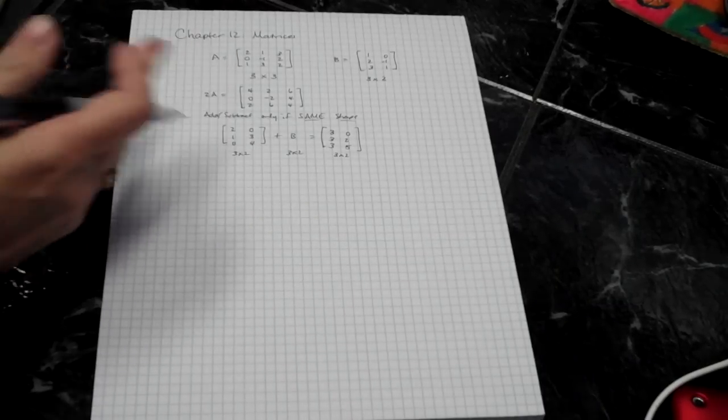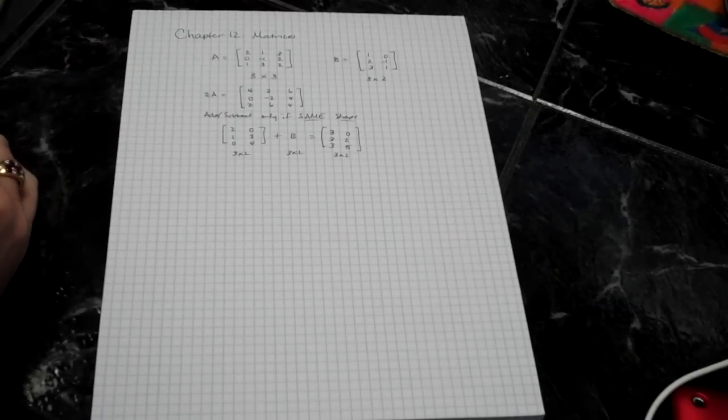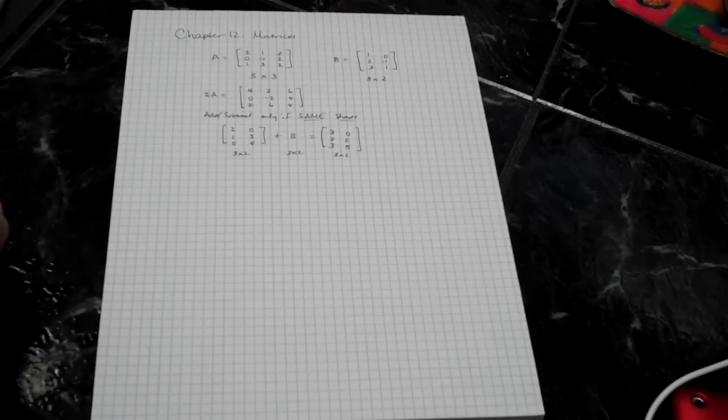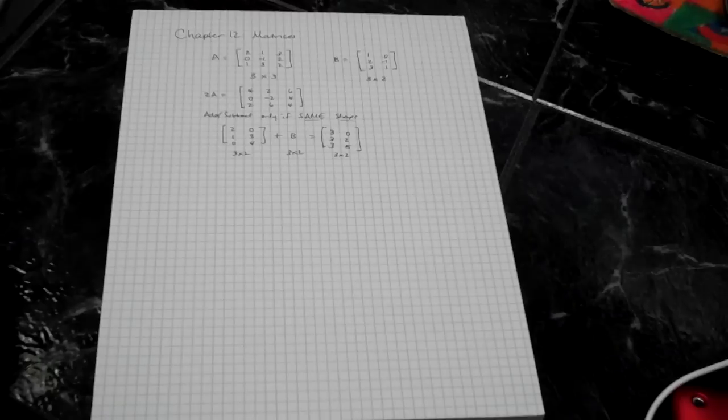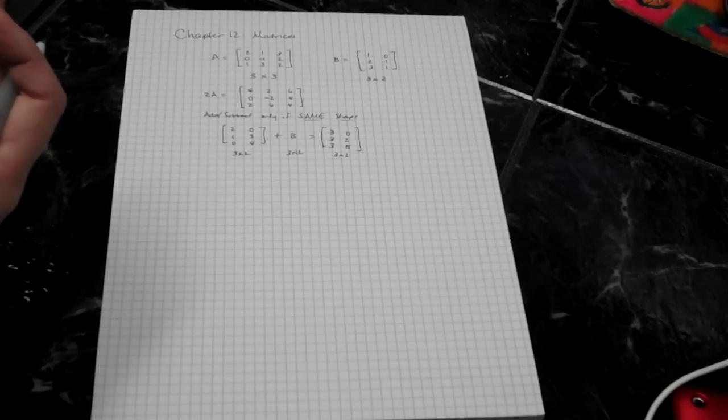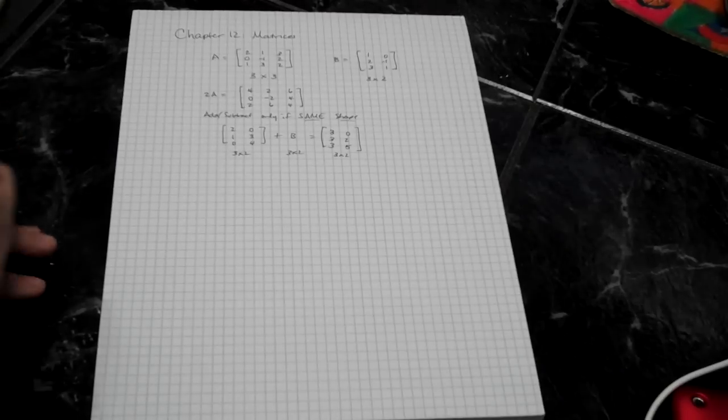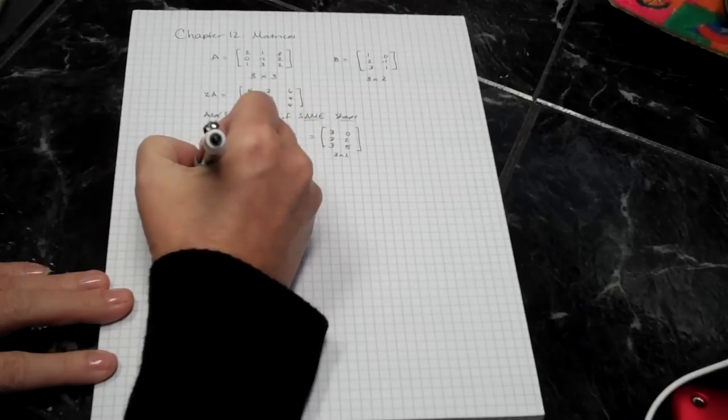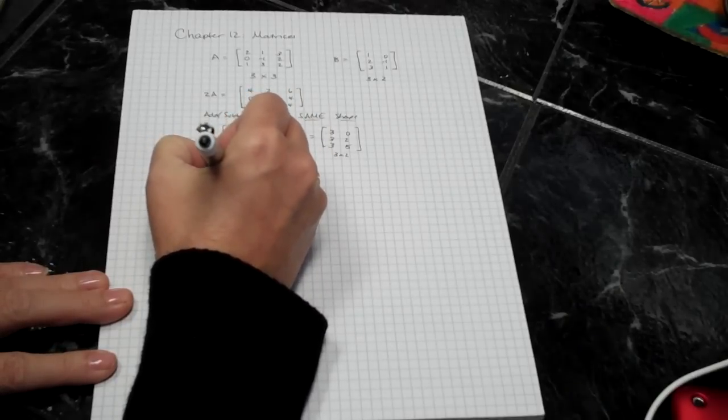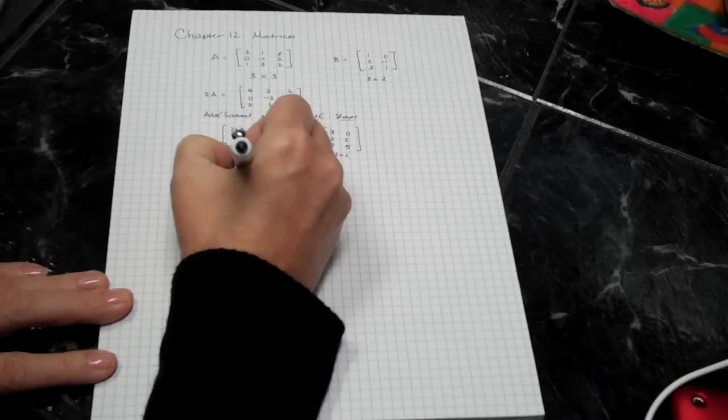And since each of these are 3 by 2, the answer is a 3 by 2. There's some call for being able to do calculations like this, but most of the time the problems that we are doing are because we can use matrices to simplify calculations with some systems of equations.